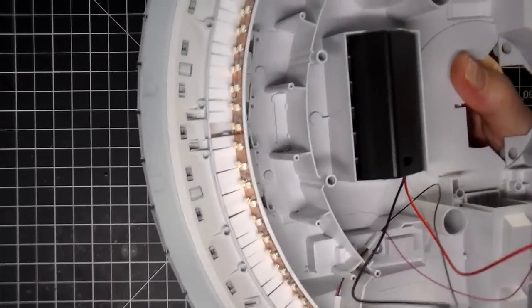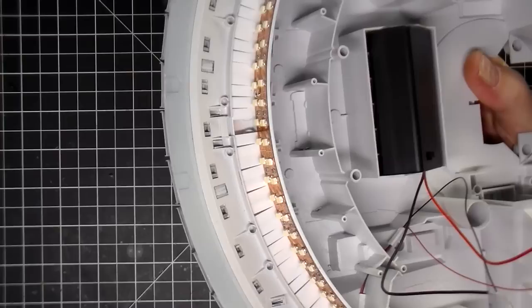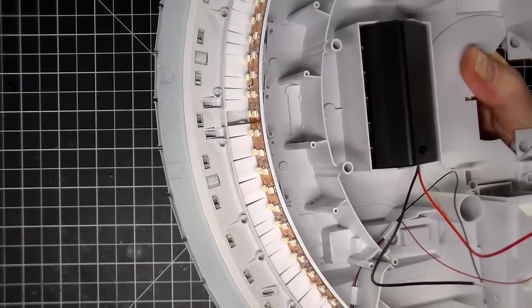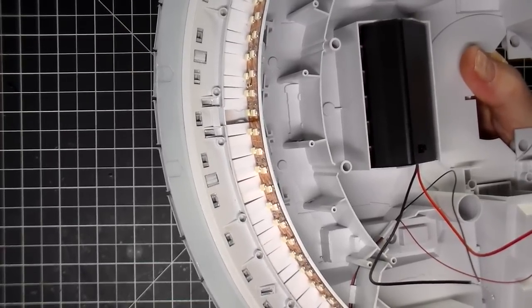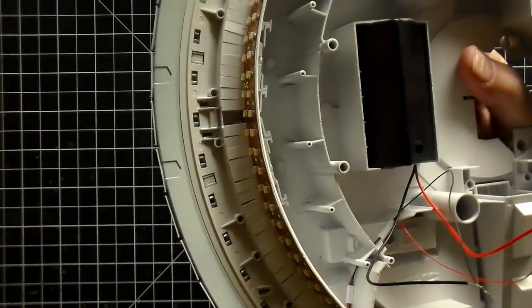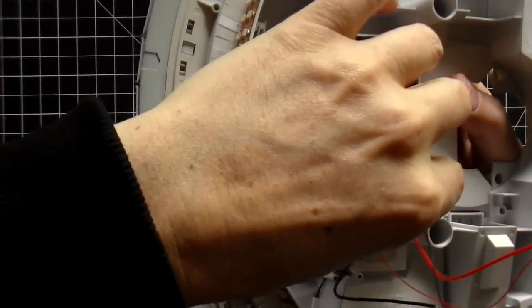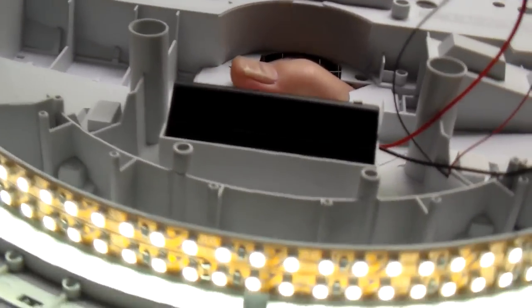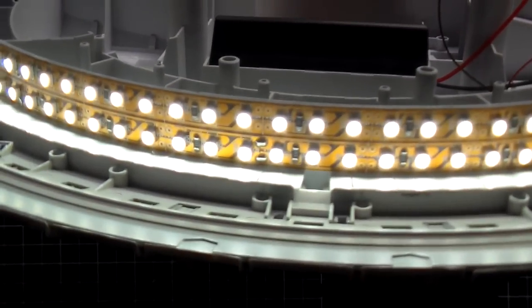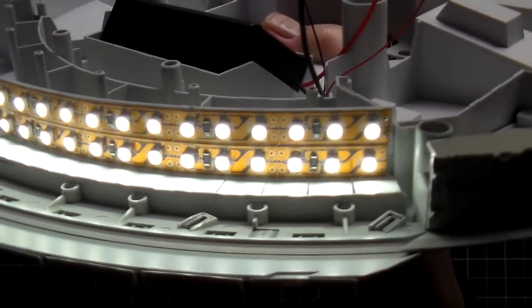So now that everything is soldered I'll turn this overhead light off and then what we can do is turn it on and see if it works. Alright, there we go. Now we have lights.